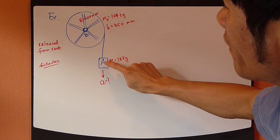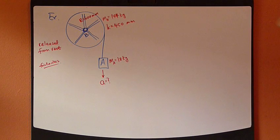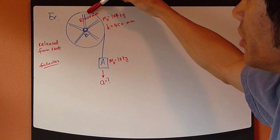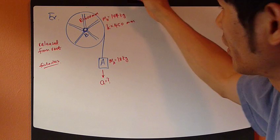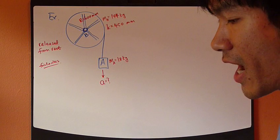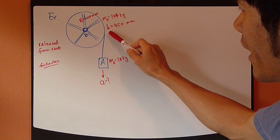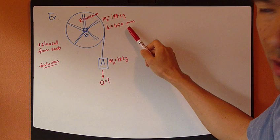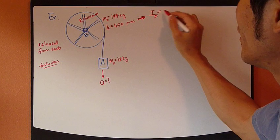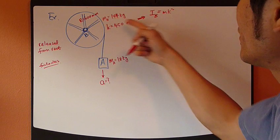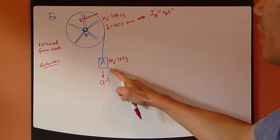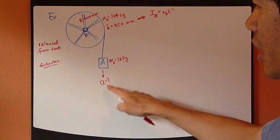This wheel is rotating about point B, and this weight right here is A. Some information is given: the radius of this wheel is 600 millimeters, which is 0.6 meters. The mass of the wheel is 144 kilograms, and k — the radius of gyration — is 450 millimeters. The mass moment of inertia about point B is simply m·k², and the mass of load A is 18 kilograms.